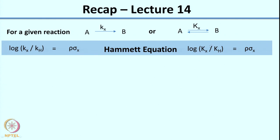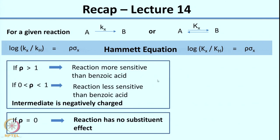This can also be used for reactions under equilibrium, where you correlate log of Kx over Kh again with dissociation of benzoic acid and get the proportionality constant rho. Based on the magnitude and sign of rho you can get a lot of valuable information about the intermediate. If you have a value of rho greater than 1, it indicates the reaction is more sensitive than benzoic acid.